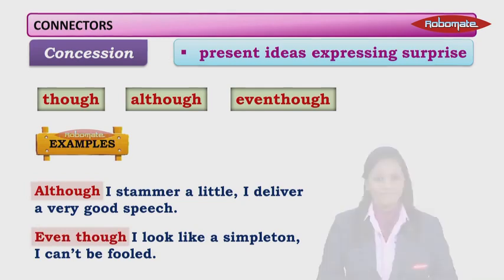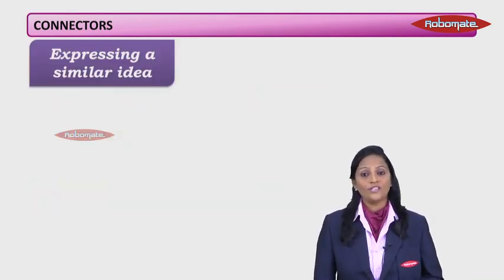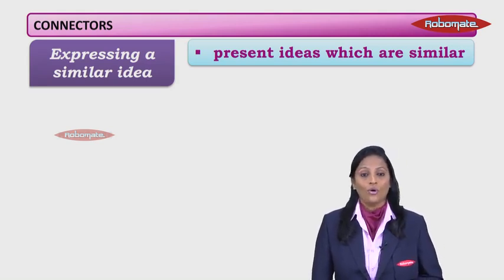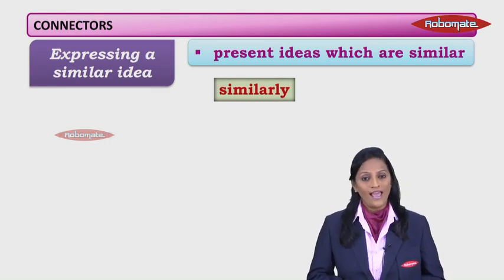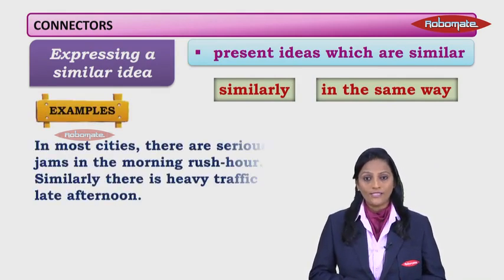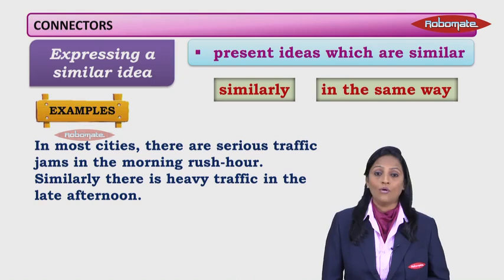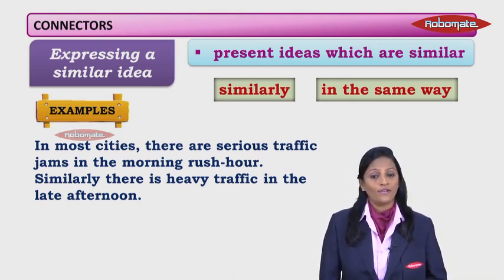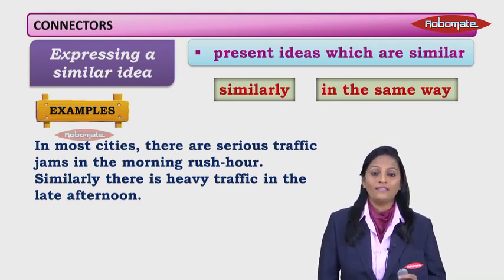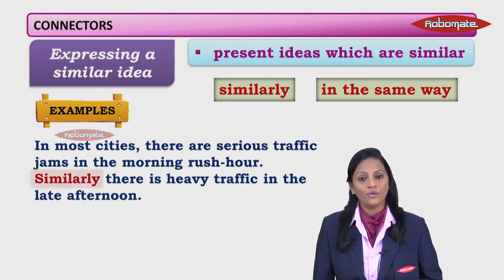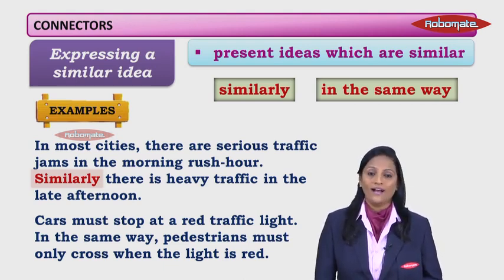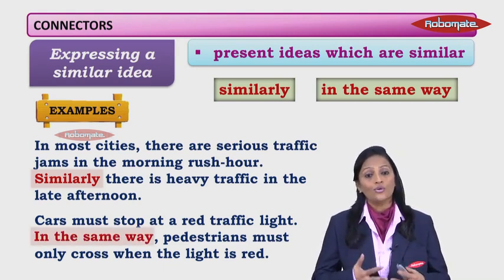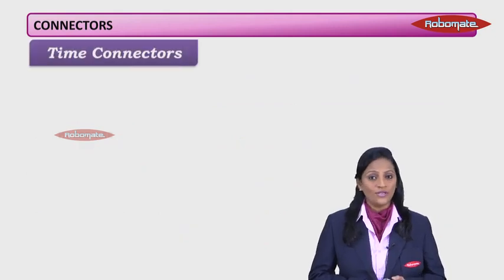The next type of connectors express or present similar ideas. Thoughts which are similar in nature are connected by similarly and in the same way. For example: In most cities, there are serious traffic jams in the morning rush hour. Similarly, there is heavy traffic in the late afternoon — similar ideas connected with similarly. Another example: Cars must stop at a red traffic light. In the same way, pedestrians must only cross when the light is red — connected by in the same way.